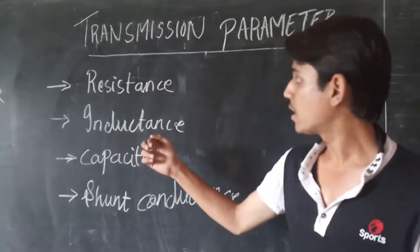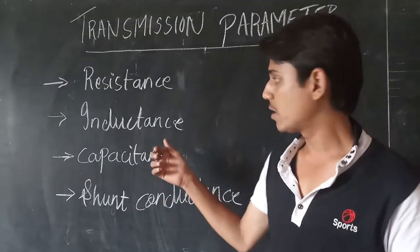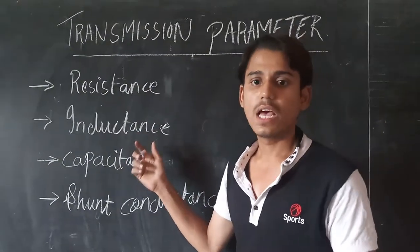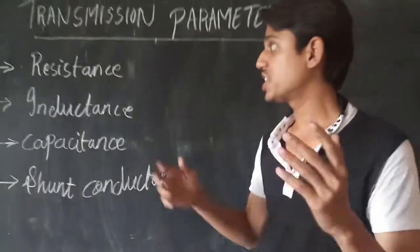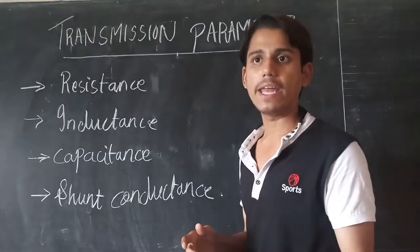First is line inductance. The current flowing through the transmission line induces magnetic flux. When the current changes, the magnetic flux also changes, and EMF varies accordingly.